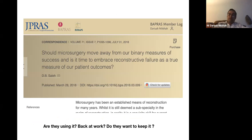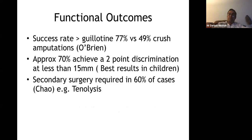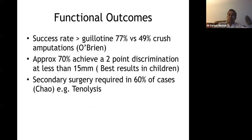In terms of outcomes: guillotine amputations do better, and approximately 70% of patients achieve static two-point discrimination of 10-15mm. Children usually achieve remarkable results — up to 5mm static two-point discrimination after replantation. Secondary surgery is often needed; up to 60% of cases require tenolysis.